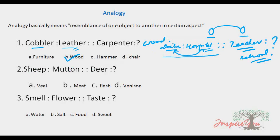Question 2: Ship, colon, Mutton, double colon, Deer, colon, question mark. The answer for this question is option D.